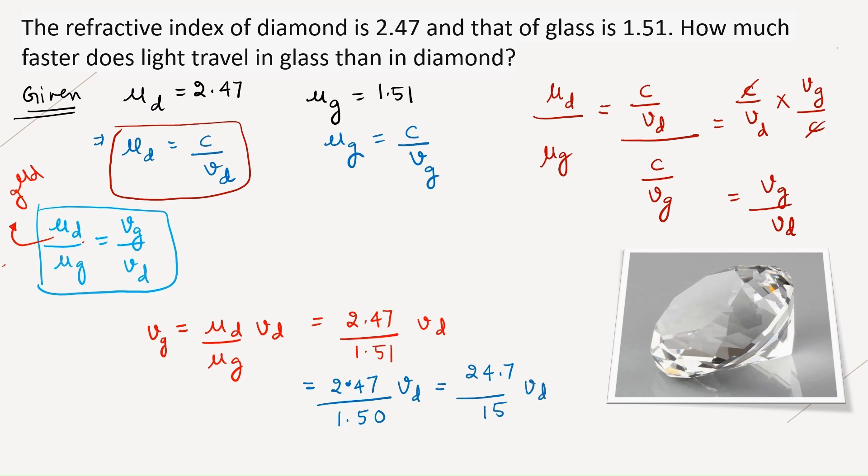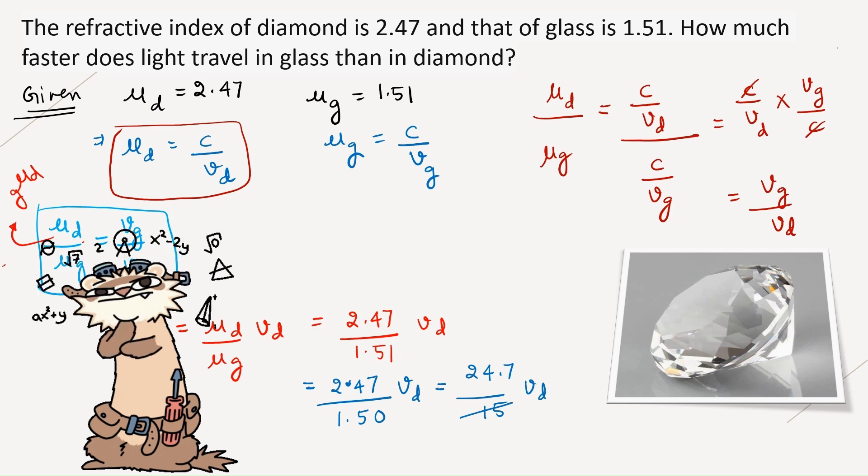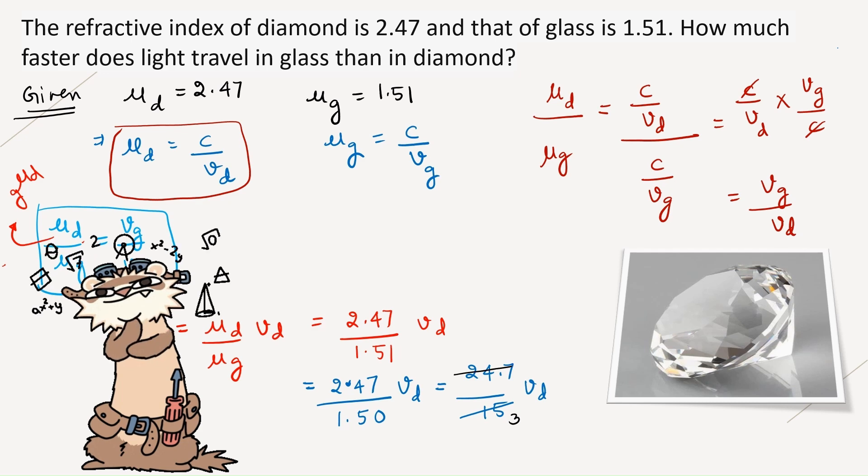Let us remove the decimal points. We will get 24.7 divided by 15 into Vd. If you are feeling difficulty in this, you do normal division with 1.51. Let us cancel it with 5 table, 5 threes are 15, 5 fours are 20, remainder 4, then 47. 5 nines are 45, remainder 2.